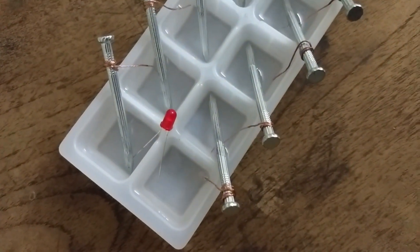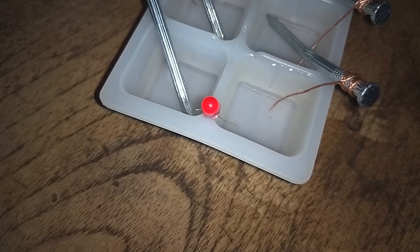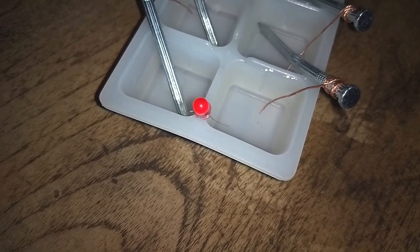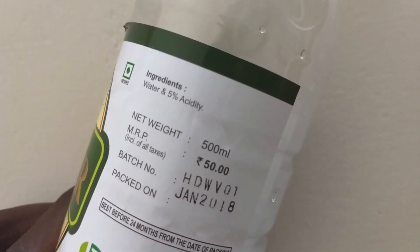Now we have a galvanic cell or voltaic cell. You use two different metals in this battery - copper and zinc. We use vinegar, which contains 5% acetic acid as our acid solution. This causes a chemical reaction that generates electricity.